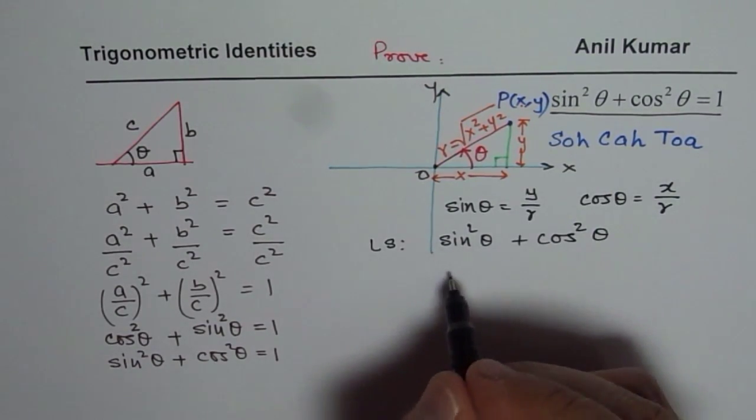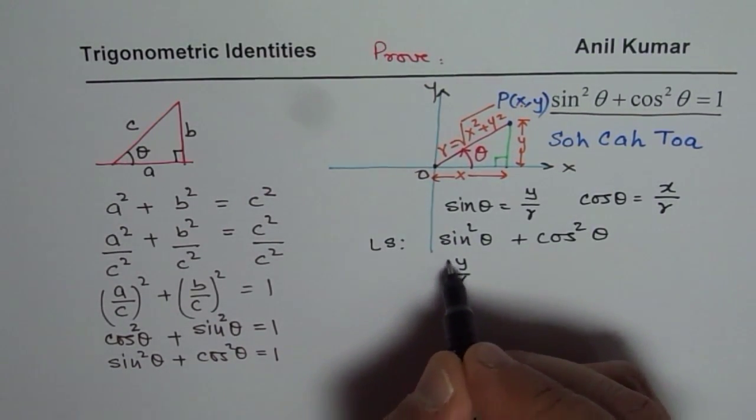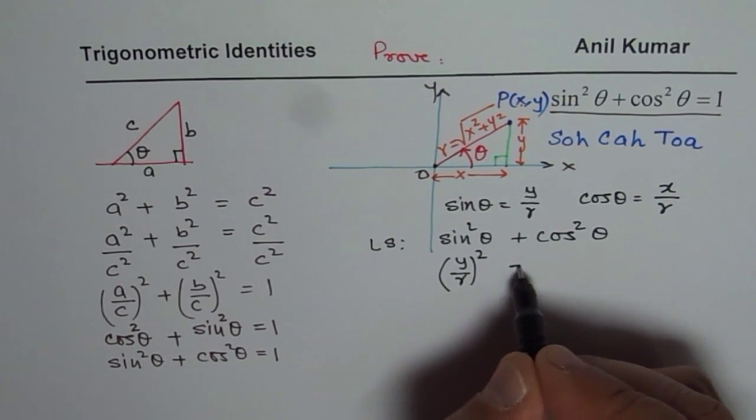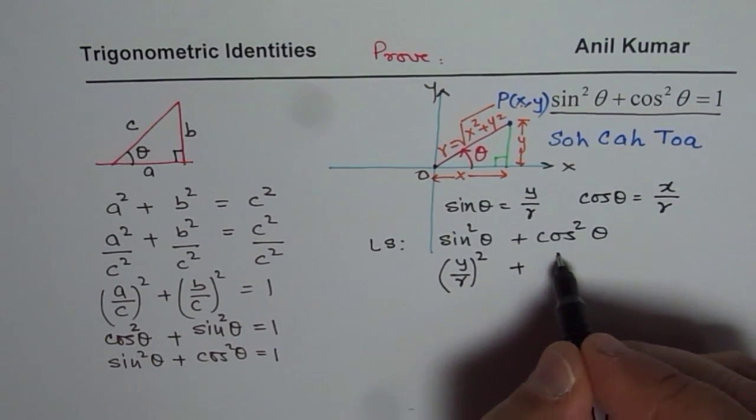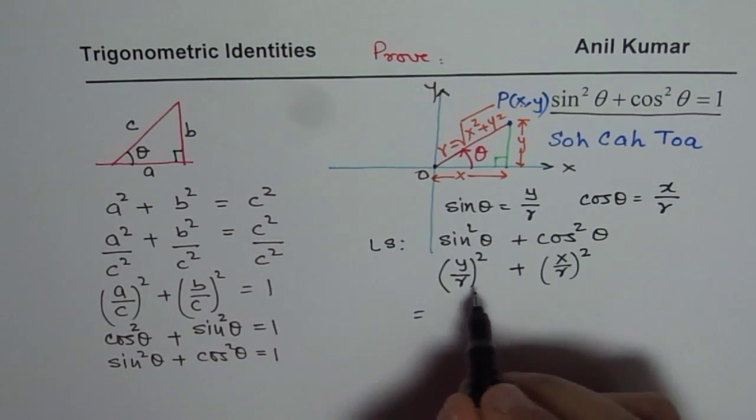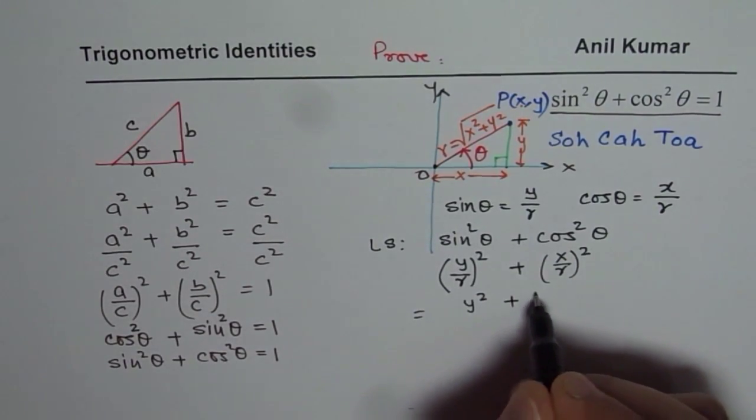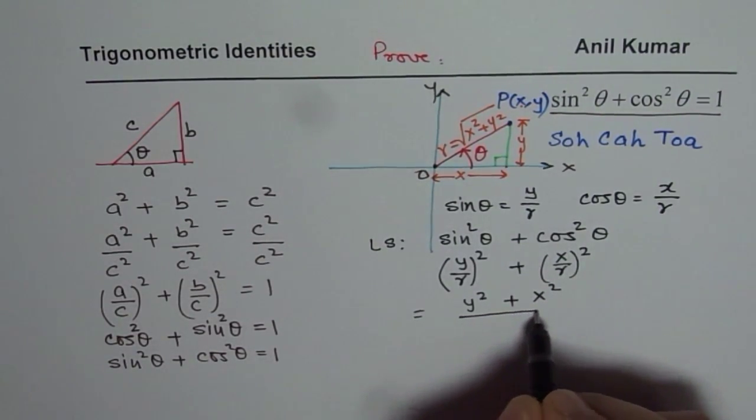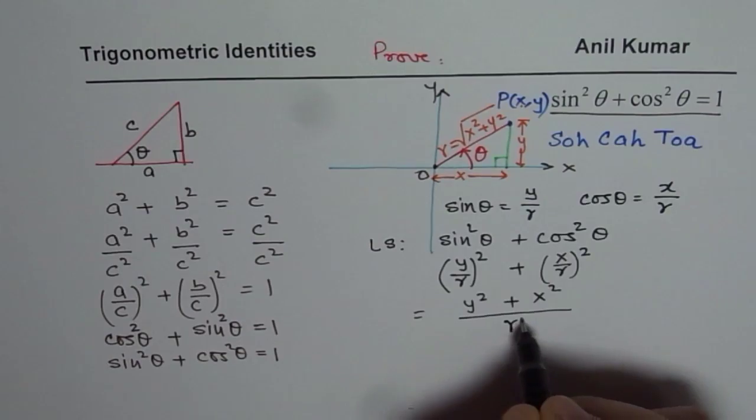which is sine square theta plus cos square theta. So sine theta is y over r, so square will be y over r whole square. Plus cos theta is x over r, so it will be x over r whole square. So r square is common. So we have y square plus x square and common r square in the denominator. Is that okay?